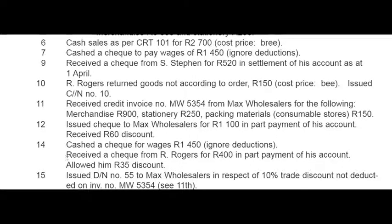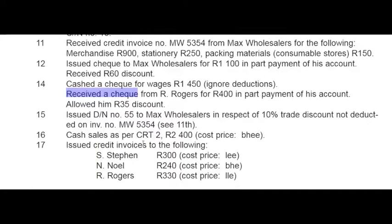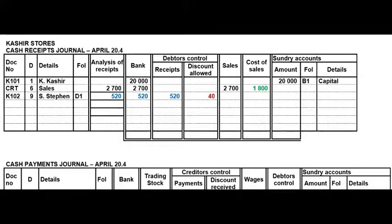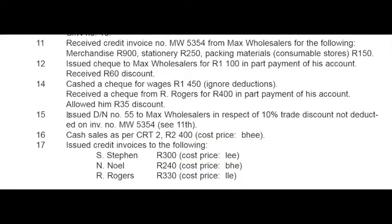Also on the 14th we received a cheque from R. Rogers for 400 rand in part payment of his account and we allowed him 35 rand discount. The value of the cheque is 400 rand, so that goes to bank and receipts, and the discount is 35 rand. This is a CRJ transaction and we issue him a receipt because he paid with a cheque. Remember these three values must balance.